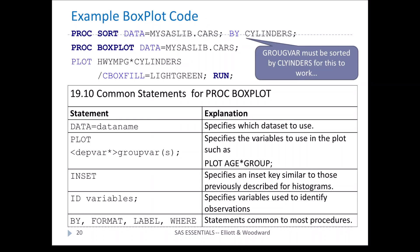Here's an example of box plot code. First we sort by cylinders. Then we do PROC BOXPLOT, and the plot is highway miles per gallon by cylinders. We have some options where we're going to fill the box with light green, then the run statement. Common statements for PROC BOXPLOT are similar to what we've seen; the only difference is the plot statement.